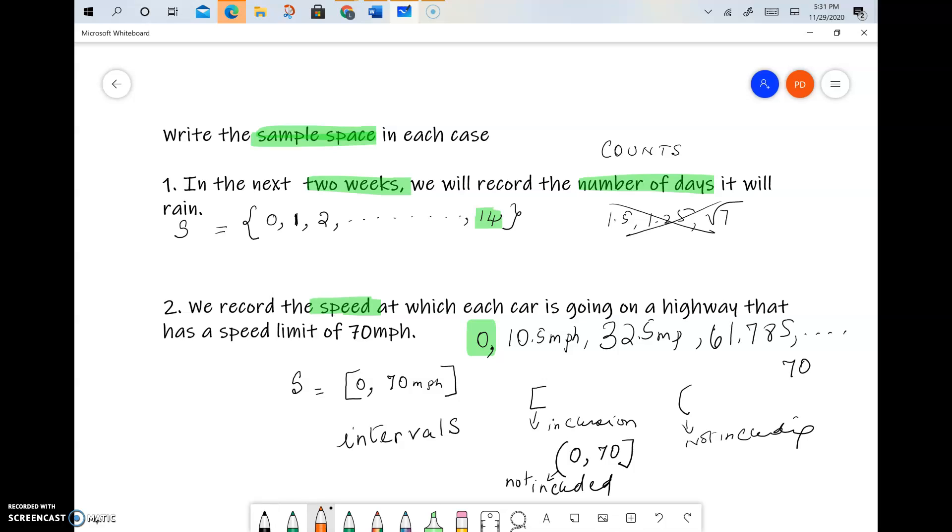If you remember, this is called a discrete sample space. Discrete means separate—it goes 0, 1, 2, 3, 4—and this is a continuous sample space.